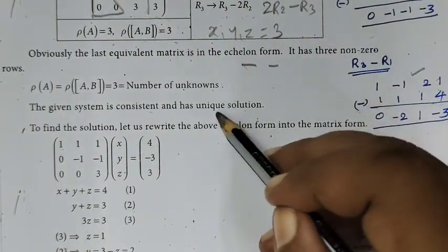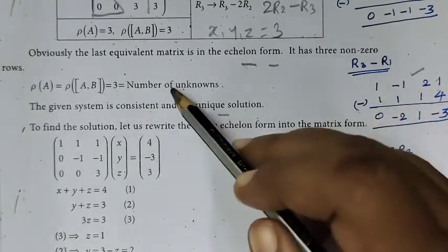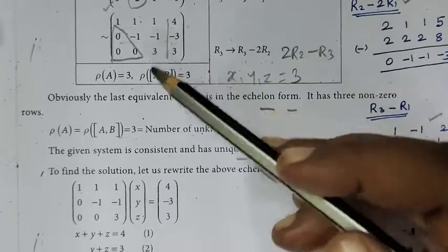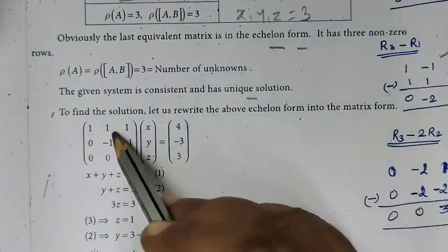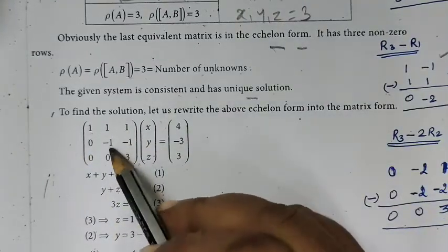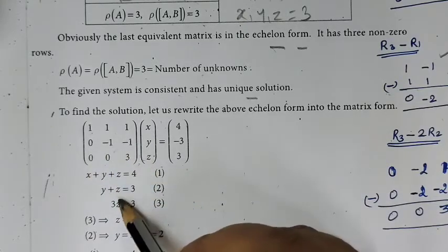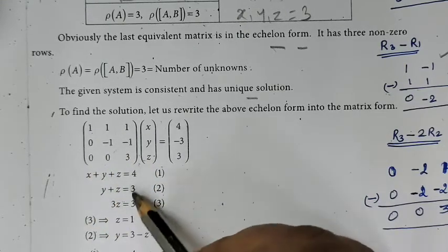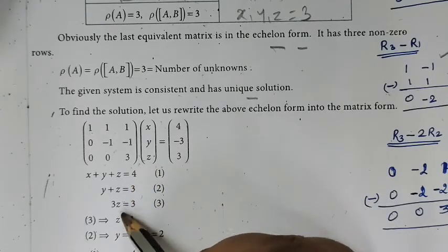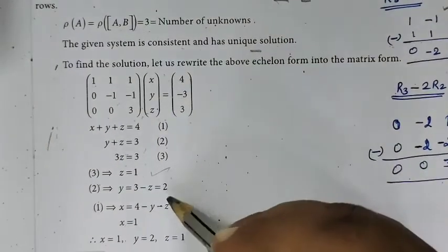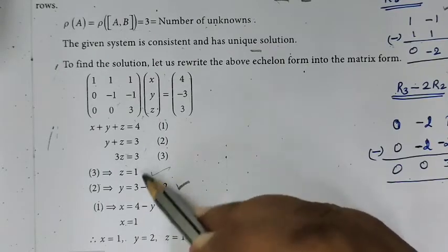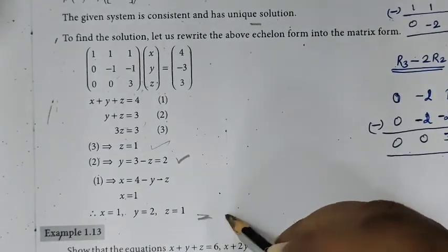The given system is consistent and has unique solution. Let's transform this matrix. The original one is like this. Let's do the transformation. 1x plus 1y plus 1z equal to 4. Minus y minus z equal to minus 3. 3z equal to 3. So z equals 1, y equals 2, x equals 1. This is the answer.